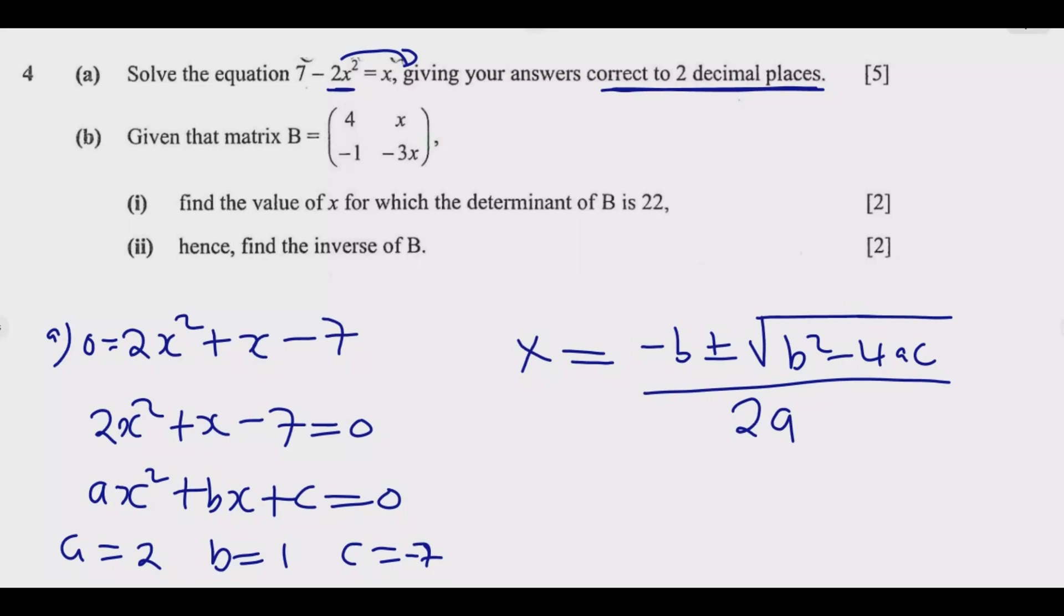The quadratic formula is x equals minus b plus or minus the square root of b squared minus 4ac, then over 2a. So this is what we need to use. It's just a matter of substituting. So x equals, now what is b? b is 1, so it will be negative 1, then plus or minus the square root of 1 squared, then minus 4 times a.